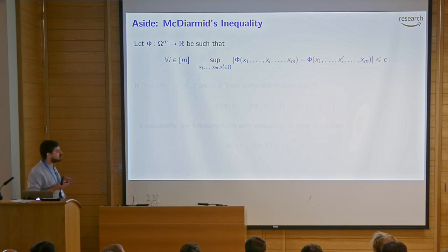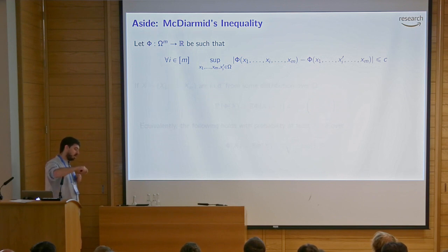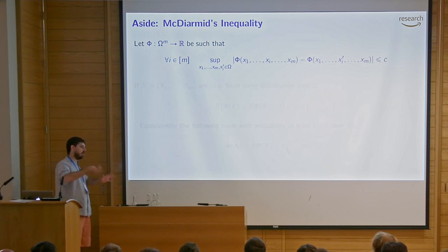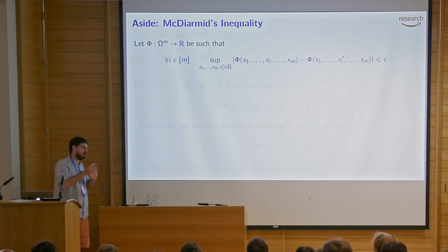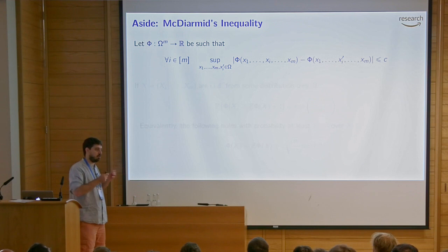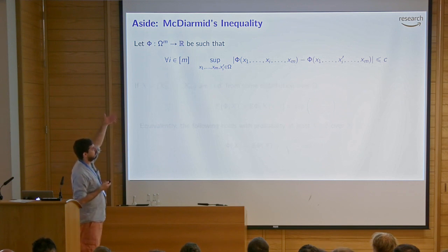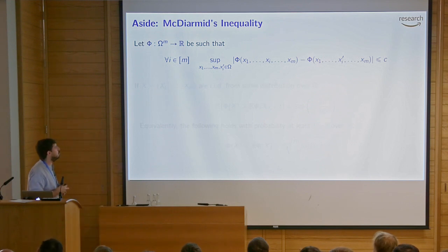McDiarmid's inequality is a concentration inequality, like Chernoff or Hoeffding bounds, but more interesting. With Chernoff or Hoeffding, you have several i.i.d. random variables and you're building a sum over them — it's always about averaging. Sometimes you have a function of m i.i.d. random variables that gives you something more complicated than a sum. This requires other types of inequalities beyond Chernoff and Hoeffding, and McDiarmid's is probably the simplest one that is quite general.